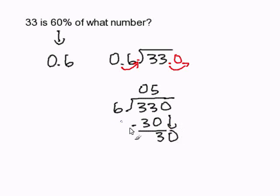Now I'm going to bring down the 0. 6 goes into 30 five times. 5 times 6 is 30. I subtract and I get 0. So my resulting answer is 55.